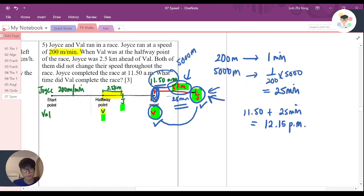So if I calculate for 5 km, you travel an extra 25 minutes. And this 25 minutes when Joyce reached here is when Valerie reached the endpoint. So I add up the time together to find out the time Valerie completed the race.